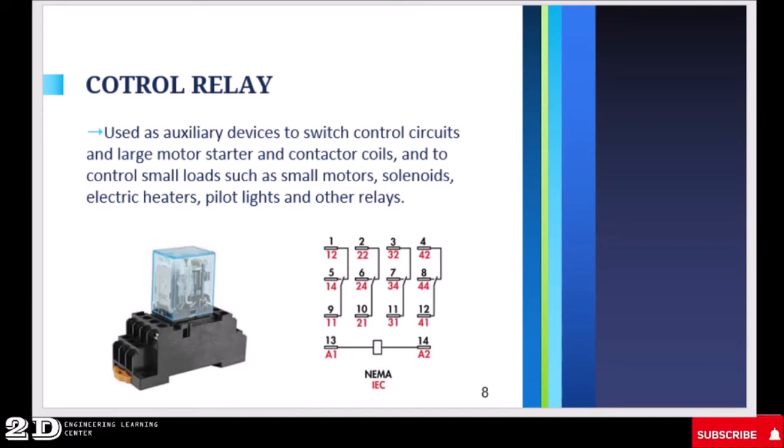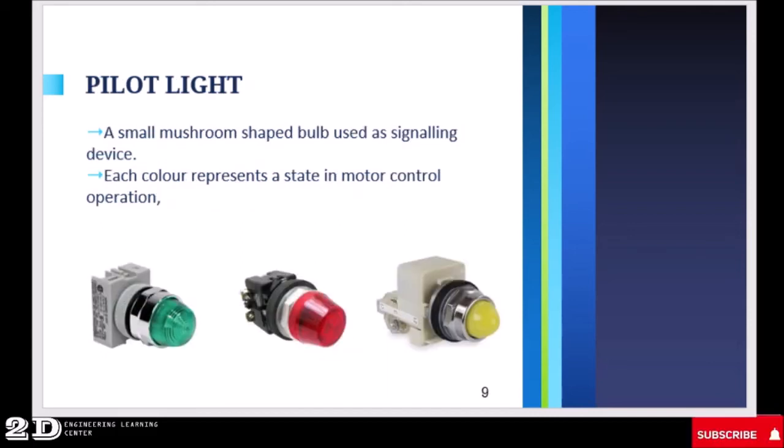Then we have the pilot light. Basically, the pilot light is the indicator. It is a small mushroom shaped bulb used as a signaling device. There is also a pilot light that is not shaped as a mushroom. There are many shapes of a pilot light, but on the picture shown, those are the mushroom shaped bulbs. Each color represents a state in motor control operation. We have here three states: the first, the green, which is the on state, then the red, which is the standby or stop state, and we have the yellow, sometimes it is orange, for the emergency or fault state.